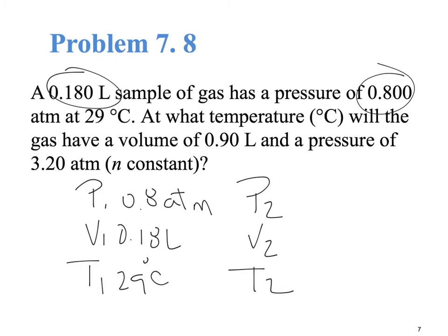Again, that doesn't work because we have to have it in Kelvin, so immediately we add 273 to give us 302 Kelvin. Our P2 is 3.2 atm. Volume is 0.90 liters, and we don't know T2.